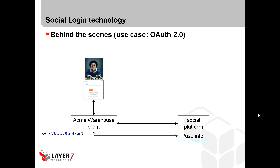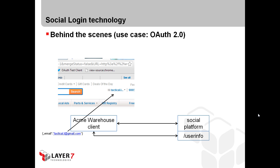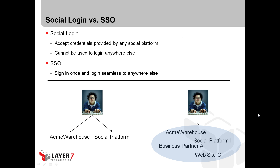The Acme Warehouse client will then use this information as a valid user name, and the user is logged in. This is called social login. The main feature of social login is to allow a user name, email address, or any other claim returned by a social platform to be used on your own website as a valid user credential. This credential is valid on your server and at the social platform itself.